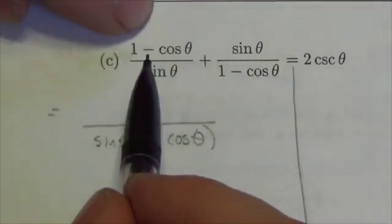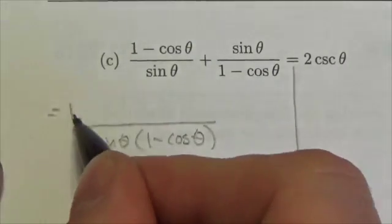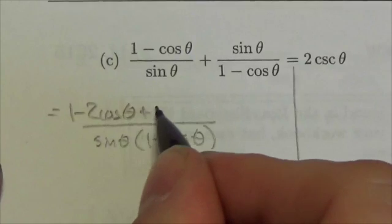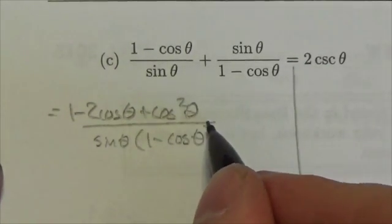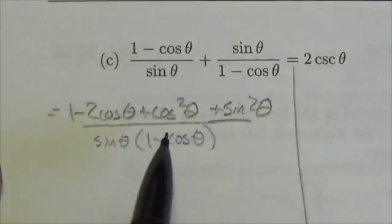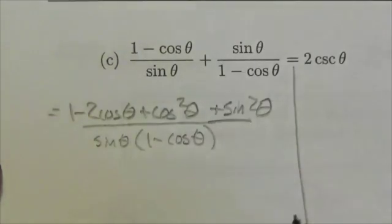That's not what this is. This is 1 minus cos squared. So my result will be 1 minus 2 cos theta plus cos squared theta, and then a plus sine squared theta, when I multiply that sine and this sine together to get the common denominators.